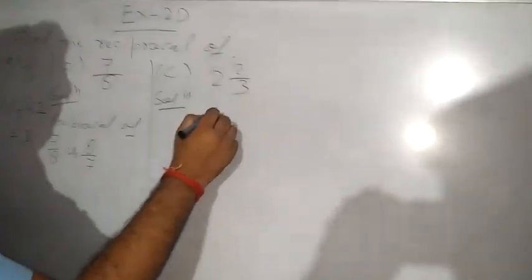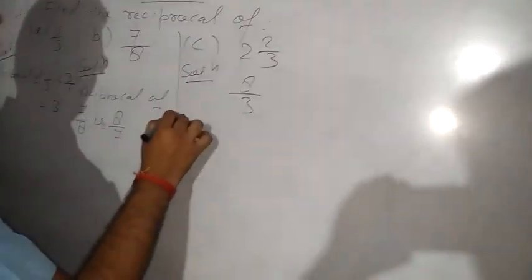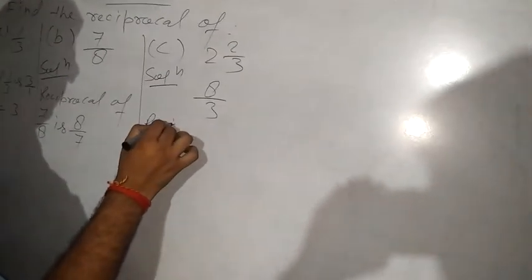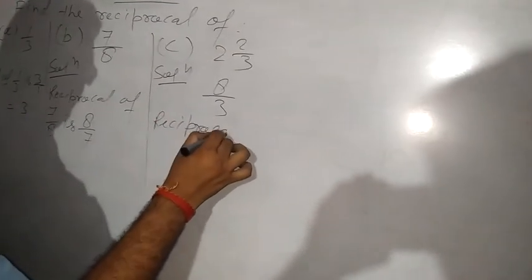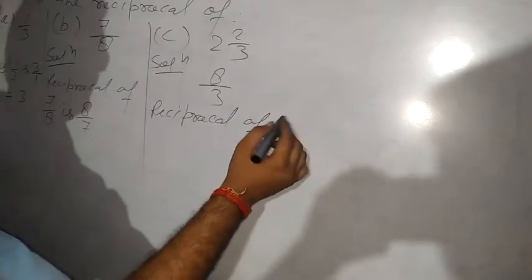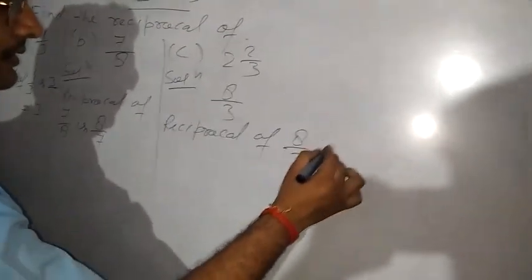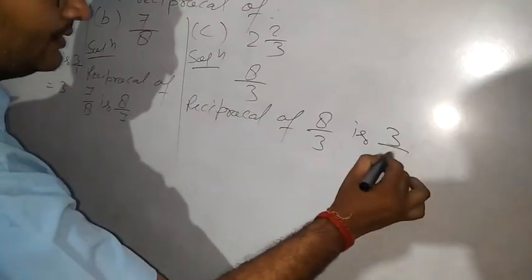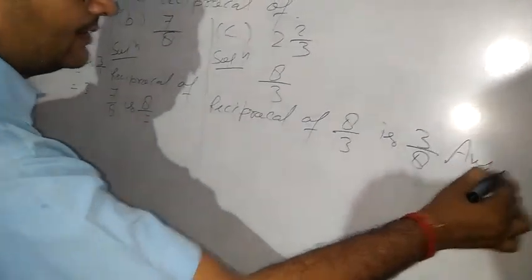And here, first we will make this improper fraction. 2 × 3 = 6, 6 plus 2 = 8, so 8/3. So we can write, reciprocal of 8/3 is 3/8. This is our answer.